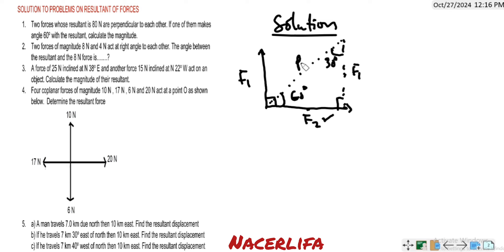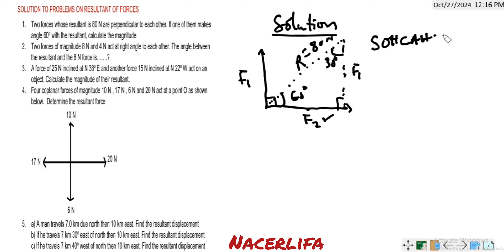This is the resultant. The resultant is given as 8 Newton. We have to find the magnitude of the force that makes 60 degrees with the resultant. Using the trig relation SOH-CAH-TOA, we can find F2 — the force that makes angle 60 degrees with the resultant.